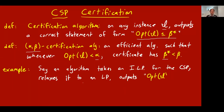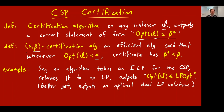The most canonical example of a certification algorithm is an algorithm that takes a CSP, considers it as an integer linear program, relaxes it to a linear program or semi-definite program, and outputs the LP optimum value. Since we're always talking about maximization problems, the LP optimum is always an upper bound on the true optimum, computable in polynomial time. Even better, LPs have a dual — an explicit certificate consisting of multipliers on the constraints which, when summed, imply the inequality that the optimum is at most some number.